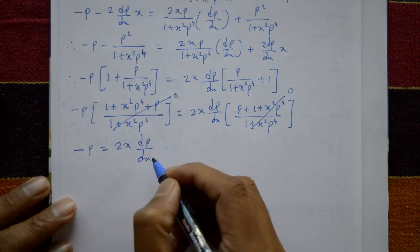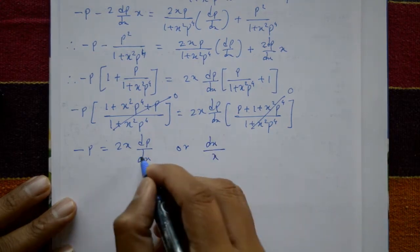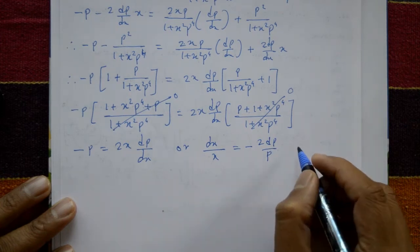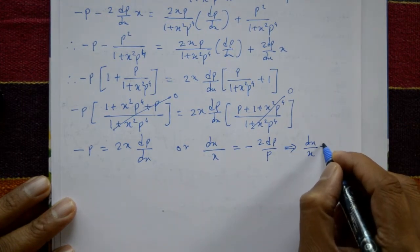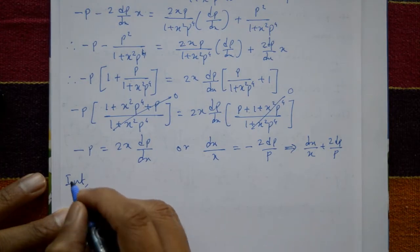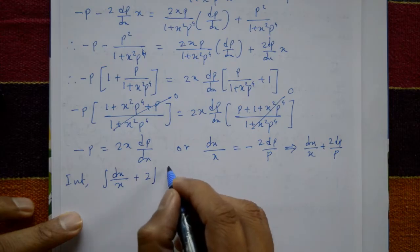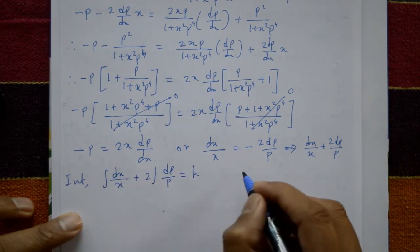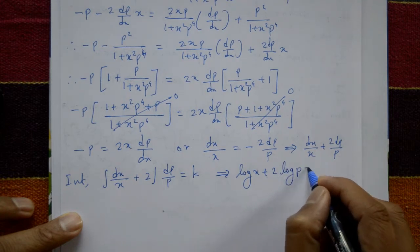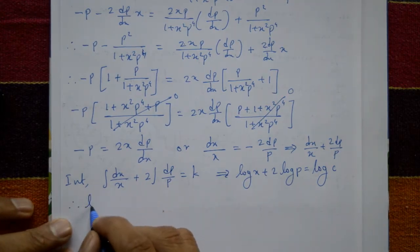Separate the variables: minus p equals 2x dp/dx. Rearranging, dx upon x equals minus 2 dp by p. That means dx/x plus 2 dp/p equals zero, or dx/x equals minus 2 dp/p. Now integrate both sides: integration of dx/x plus 2 times integration of dp/p equals k.